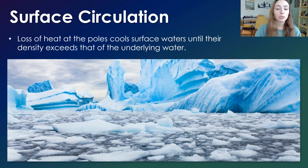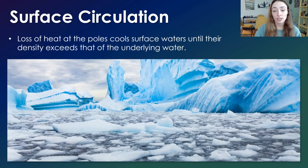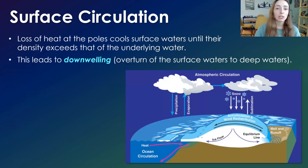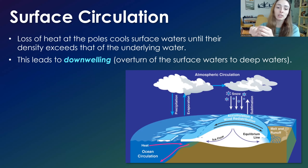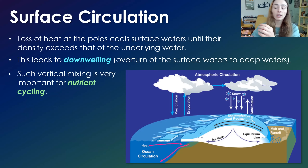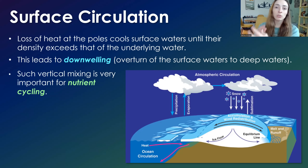The loss of heat once water reaches the poles cools the surface water until its density exceeds that of the underlying water. Once this happens, it leads to something called downwelling, or the overturn of the surface waters to the deep waters. The water travels to the pole, gets cold, and sinks to the bottom due to its cold, dense, saline content. This leads to vertical mixing of the ocean — the mixing of surface waters with deeper waters.